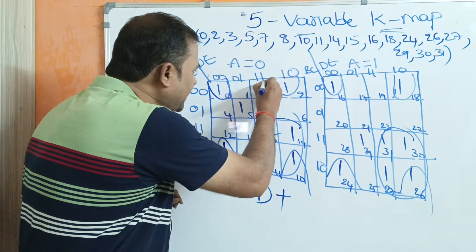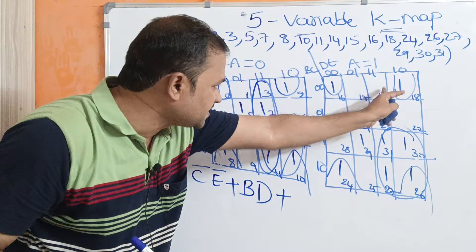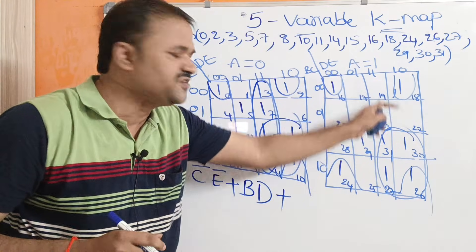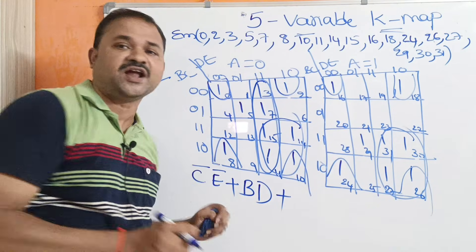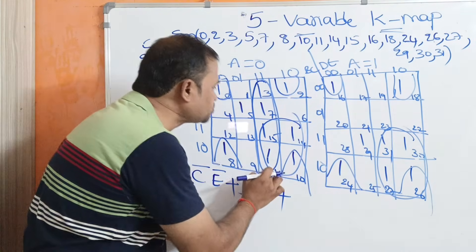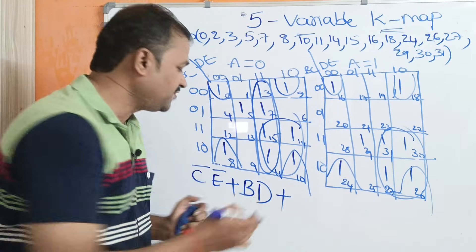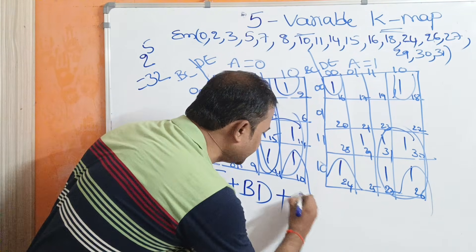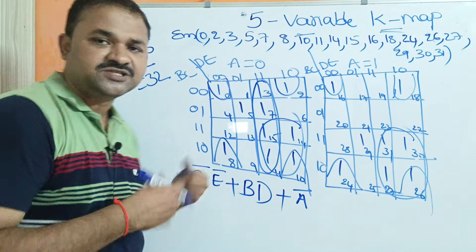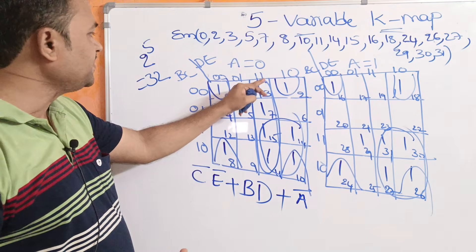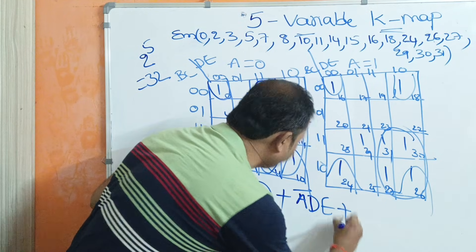Now we can combine these four cells as one group. But at this position in the second map we don't have any ones, so this group belongs to only this corner of the first map. In this corner of the map, A value is 0, so we write Ā. Here B and C values are changing, so no need to consider B and C. The DE values are 1,1, so we write DE. This group represents the minterm ĀDE.